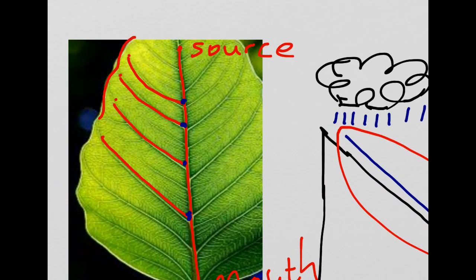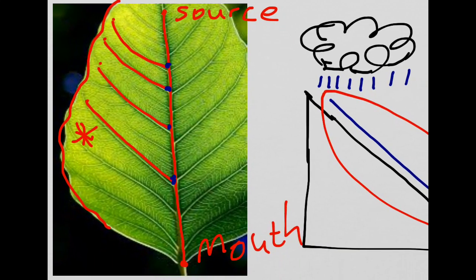The edge of the leaf represents the watershed. The watershed is the dividing line between two drainage basins and is often an area of high land. If we have precipitation falling on this side of the watershed, it will drain into the main river channel and make its way out to the sea via the mouth of the river.